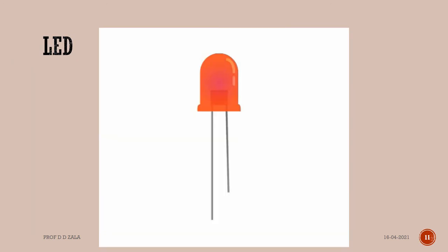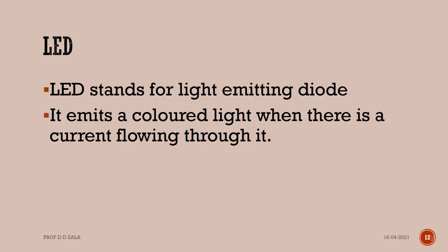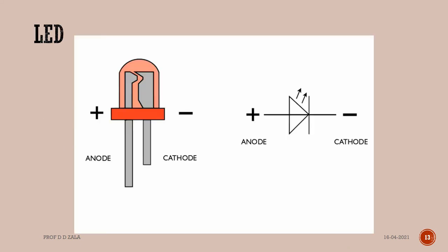Next, we will learn about LED. LED stands for light emitting diode. It emits a colored light when there is a current flowing through it. An LED has two leads, namely anode and cathode.